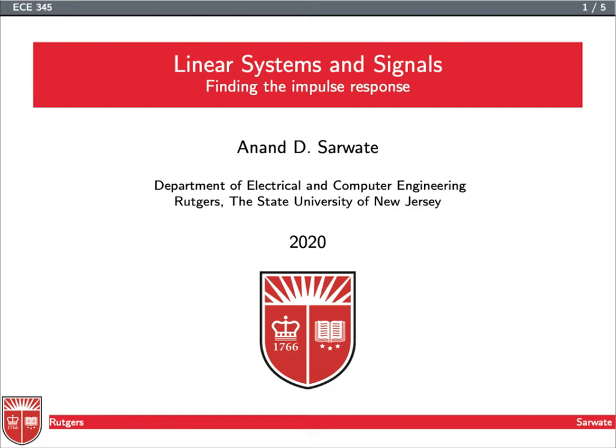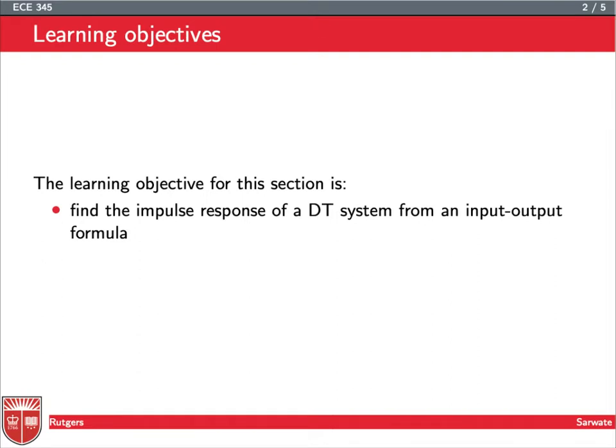So now that we've seen discrete time convolution and the impulse response, I guess one question is, what kind of information do we need to figure out what the impulse response is? This is just a short description of that process. What I'd like to do is be able to find the impulse response of a discrete time system from an input-output formula. If I tell you some relationship between the input x and the output y, can you use that to derive the impulse response?